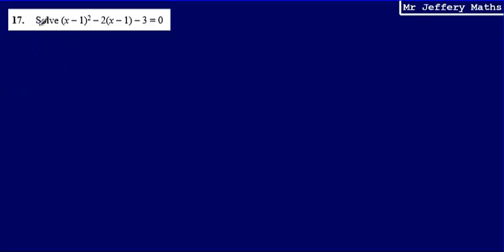This is question 17. Here I'm asked to solve x minus 1 all squared minus 2 times x minus 1 minus 3 is equal to 0. So when I've got an equation with brackets, generally speaking, the best thing to do is to expand those brackets and then simplify. So let's start doing this.